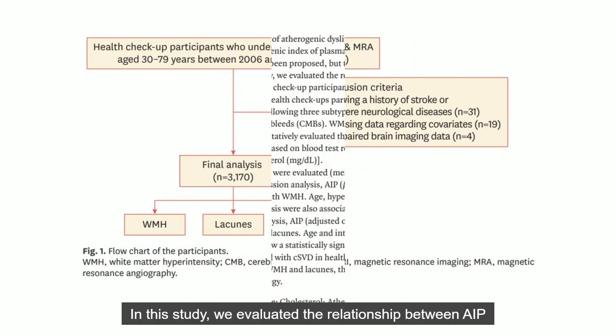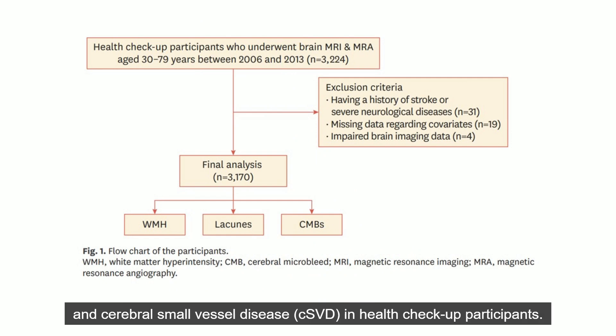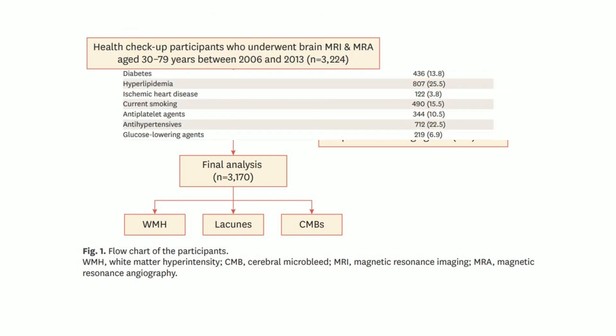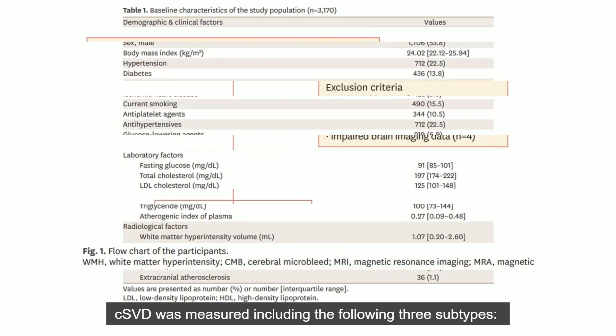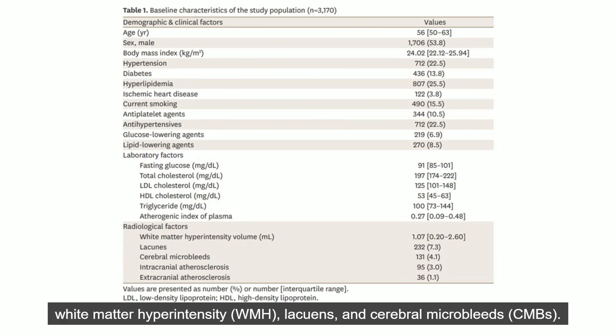In this study, we evaluated the relationship between AIP and cerebral small vessel disease in health checkup participants. We assessed consecutive health checkup participants between 2006 and 2013. Cerebral small vessel disease was measured including three subtypes: white matter hyperintensity, lacunes, and cerebral microbleeds.